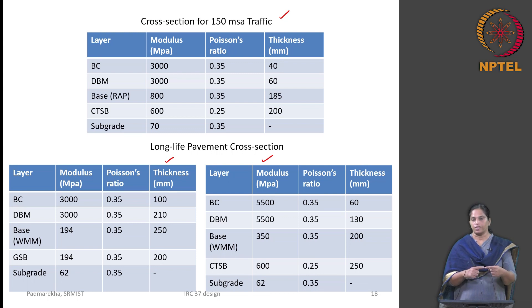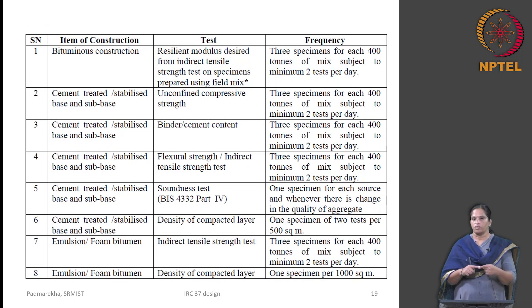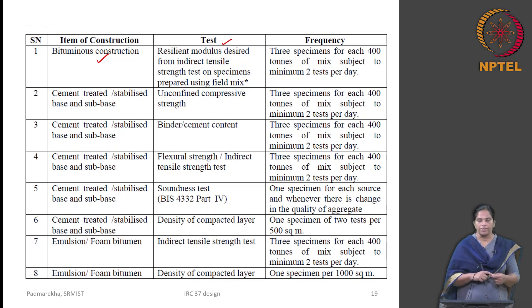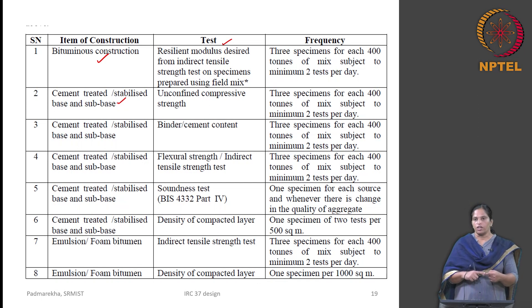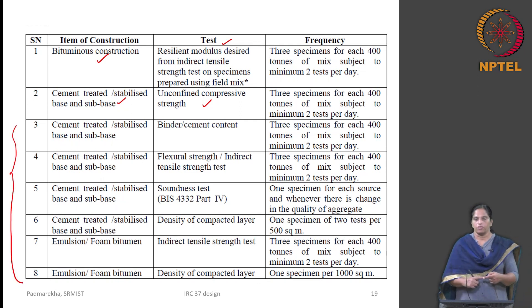The modulus value plays a critical role in the design, so it is necessary that the modulus value used in design is met during construction. IRC suggests quality control measures for this: for bituminous concrete material, collect three specimens for each 400 tons of mix and test the resilient modulus value from the indirect tensile strength test to ensure the field mix meets the design resilient modulus. For cement treated or stabilized base and sub base course, determine the unconfined compressive strength and check whether it meets the design requirement.